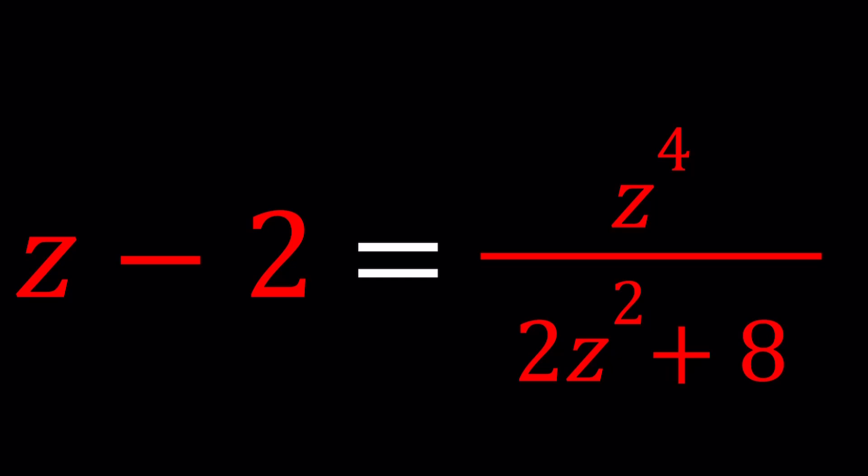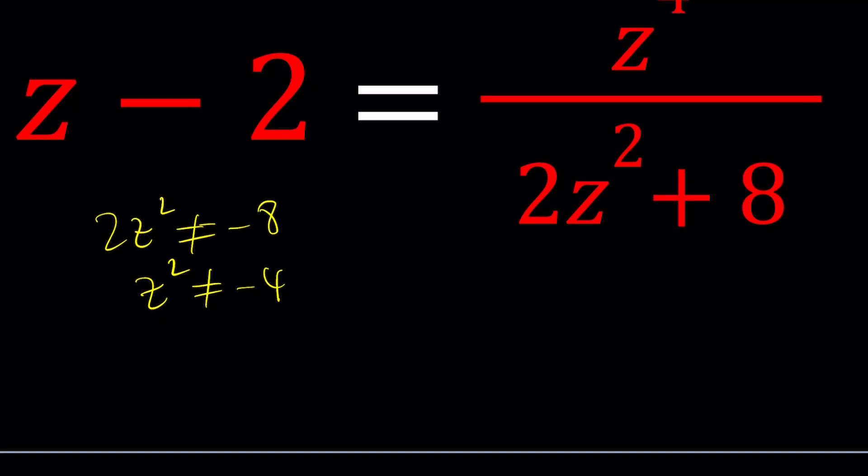First of all, I'm going to cross-multiply. Notice that we don't want the denominator to be zero, so 2z squared does not equal negative 8. That's required, which means z squared does not equal negative 4. So we got to make sure that z is not 2i or negative 2i because those would make our expression undefined.